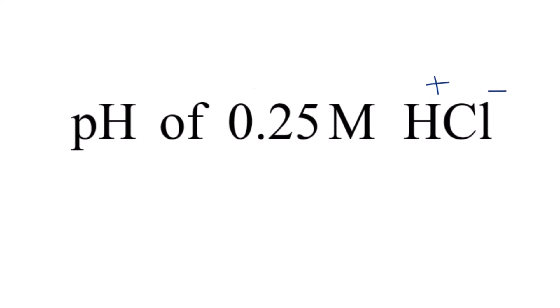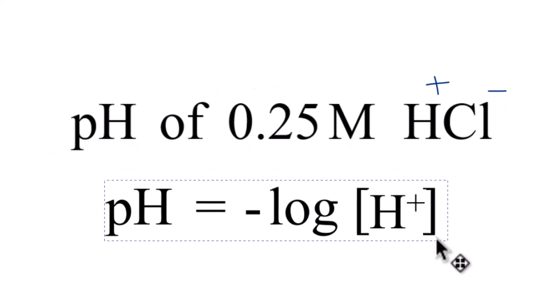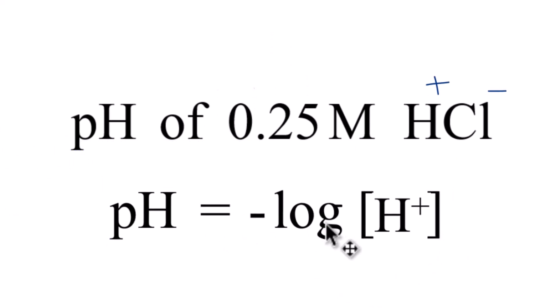And we can use this formula here to figure out the pH. So pH equals negative log of the concentration of the H+ ions. These H+ ions right here, that's the H in pH.